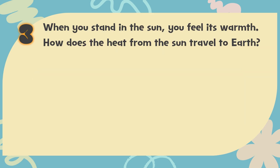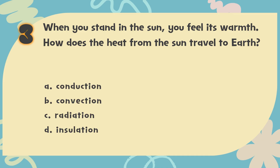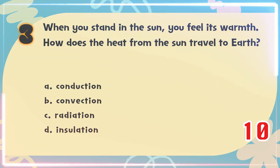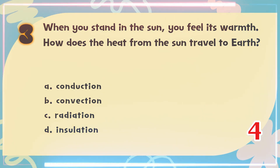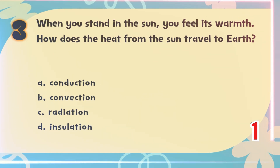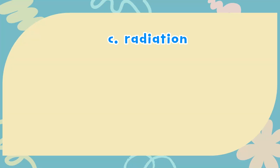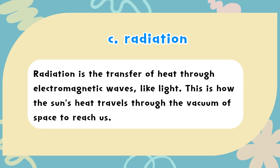Number 3. When you stand in the sun, you feel its warmth. How does the heat from the sun travel to Earth? The choices are: A. Conduction, B. Convection, C. Radiation, D. Insulation. The correct answer is C. Radiation. Radiation is the transfer of heat through electromagnetic waves, like light. This is how the sun's heat travels through the vacuum of space to reach us.